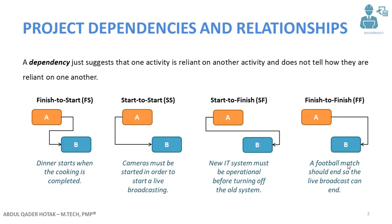The difference between dependency and relationship is that a dependency suggests that one activity is reliant on another activity, but it does not tell how it is reliant to that specific activity. Relationships, on the other hand, clearly show how the activities are linked to each other.